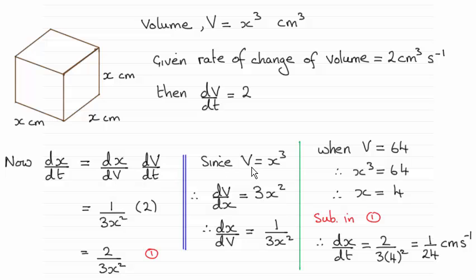Differentiating it with respect to x, that gives us 3x². And then using the reciprocal rule, we get that dx/dV will be 1/(3x²).